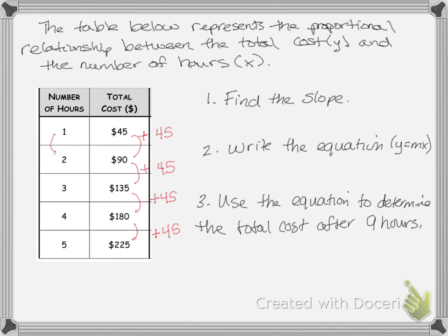Now I'll check my change in x. Going from 1 to 2 is an increase of 1; 2 to 3 is 1; 3 to 4 is 1; and 4 to 5 is 1. To find the slope from a table, I use m equals change in y over change in x. My change in y was 45 and my change in x was 1, so my slope is 45. My answer is m equals 45.